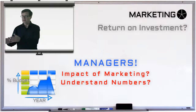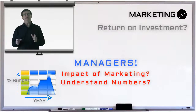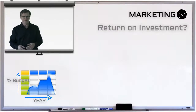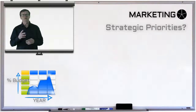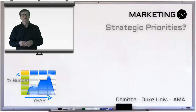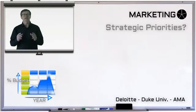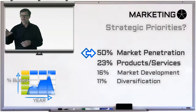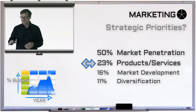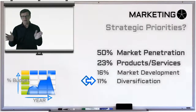And finally, the last hard data question we might ask is: what should or could be the three strategic marketing priorities for companies in general today? Think for a minute — what would be your answer? Well, in the Deloitte, Duke University, and American Marketing Association study referred to earlier, strategic marketing activity spending by companies today breaks down as follows: 50% on market penetration, 23% on product and service development, 16% on market development, and 11% on diversification.